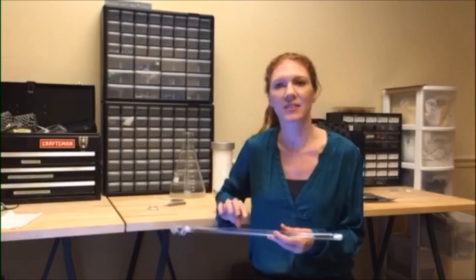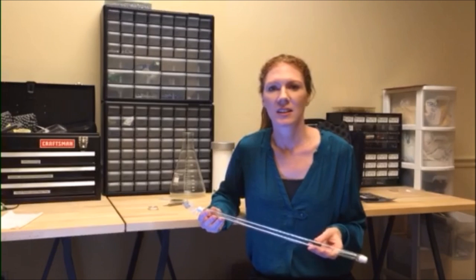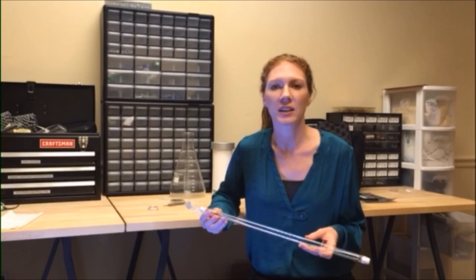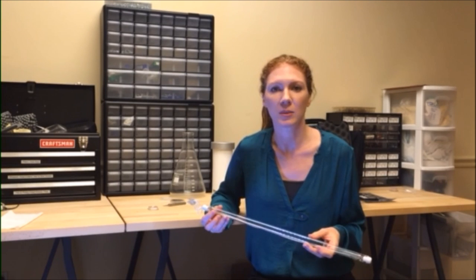Traditionally, ultraviolet disinfection is performed using mercury-based lamps, like this one. These lamps are bulky, fragile, they don't perform well under on and off cycling conditions. Also, these lamps contain the toxic element mercury, which is a big problem for our environment.